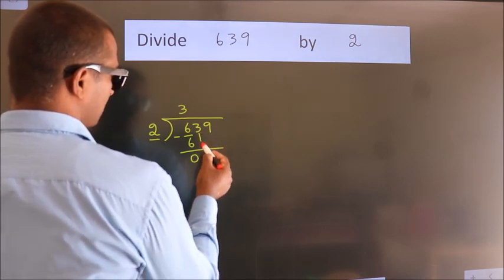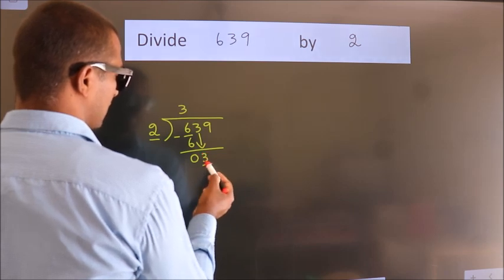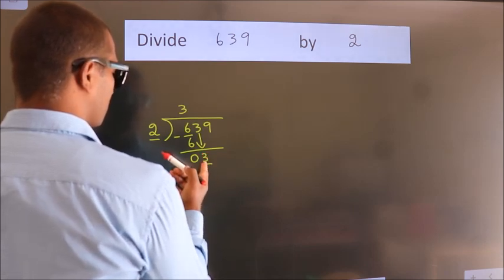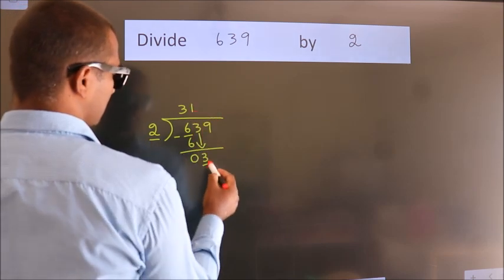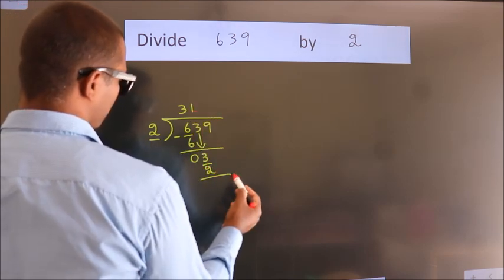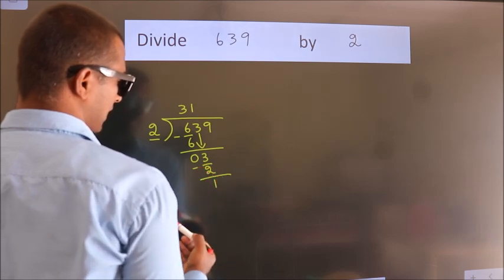After this, bring down the beside number. So 3 down. So 3. A number close to 3 in 2 table is 2 times 1 is 2. Now we subtract. We get 1.